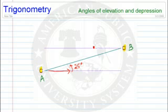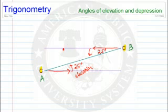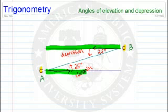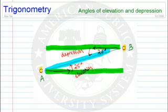Person B could also measure how their line of sight has changed from the horizontal downwards until they're looking at person A. Now if the angle of elevation is 25 degrees, then this angle, which we call the angle of depression, is also going to be 25 degrees. The reason for that comes from geometry: the horizontal lines must be parallel, and two parallel lines crossed by a third line form equal angles — these are called alternate interior angles.